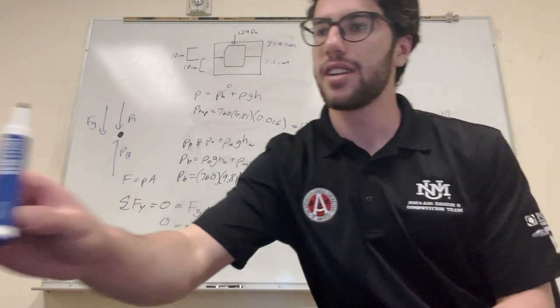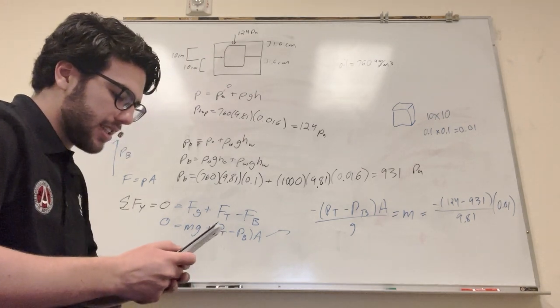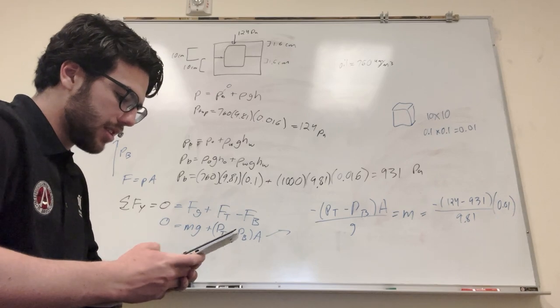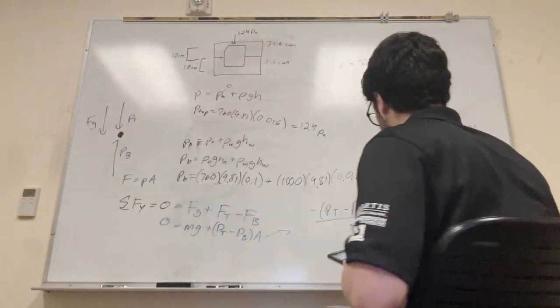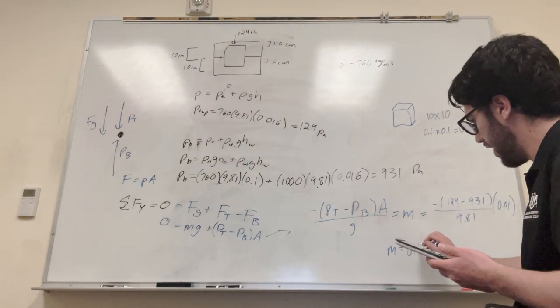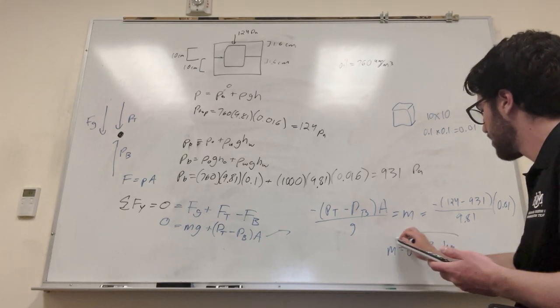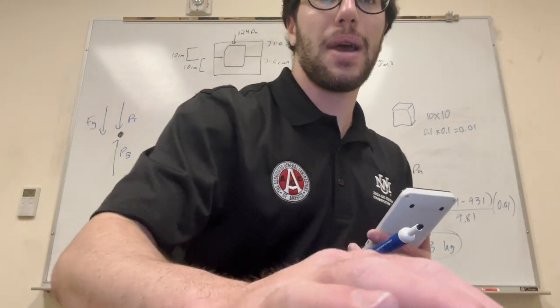Plug all that into your calculator. I will do that right now. And then that gives you that mass is equal to 0.823 kilograms. So there's mass. Nice. And then, so yeah, that's how you find mass.